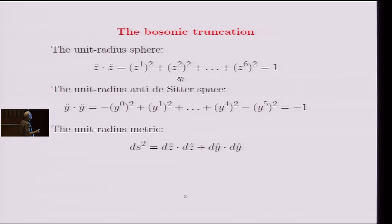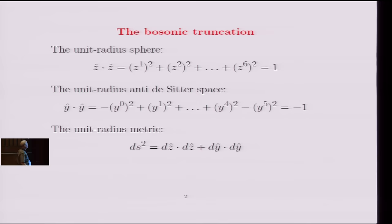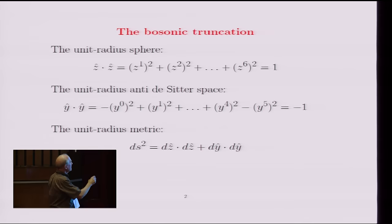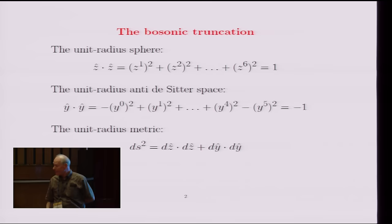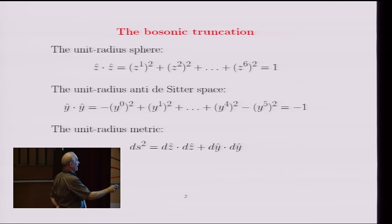Let me just say how I describe a sphere in anti-de Sitter space. So I describe a sphere in the same way you would teach in high school how to do it, as the sum of squares equal 1. And the unit radius anti-de Sitter space is described in the same way with a couple of minus signs. And then you can easily write down the unit radius metric for AdS5 times S5, and that's just given by the formula at the bottom here.